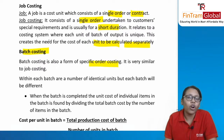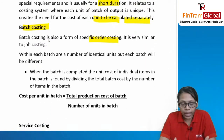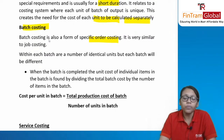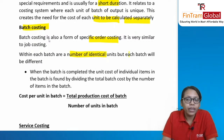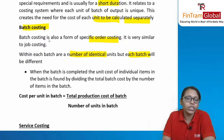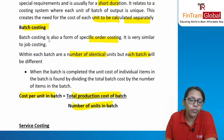Batch costing is also a form of specific order costing, but production is in batches. Within a batch, goods produced are the same, but across batches the products differ. Within each batch, the number of units produced are identical, but each batch is different from another. Cost per unit in batch = total production cost of batch ÷ number of units in batch.